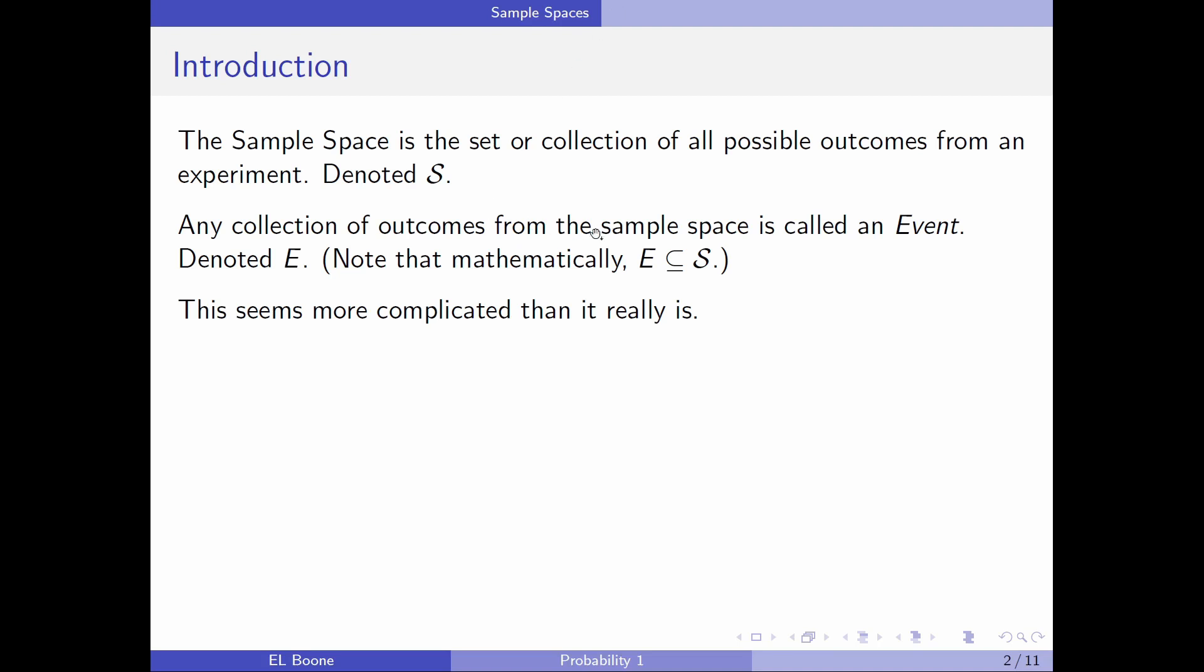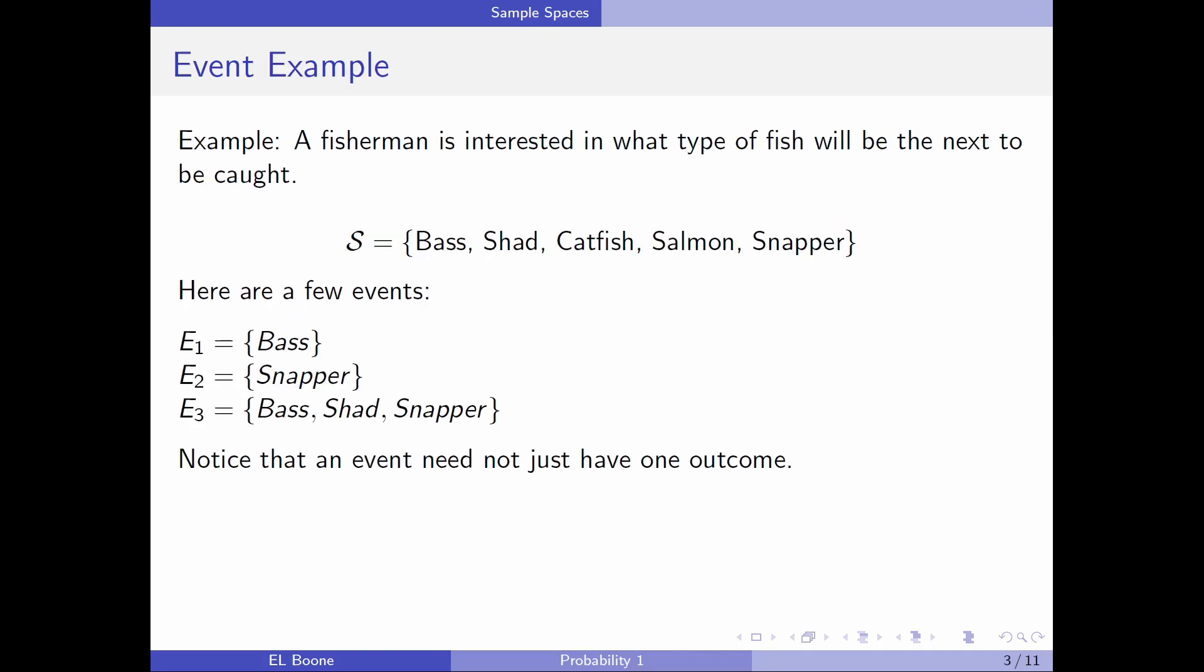So any collection of outcomes from a sample space is called an event, and we're going to denote that E or F. Now, if you're mathematically savvy, this would be E is contained in the sample space S. This is very much like set notation. And when you start looking at this, it will seem more complicated than it really is, so just hang in there.